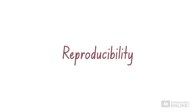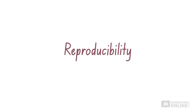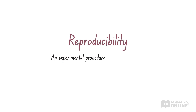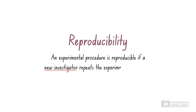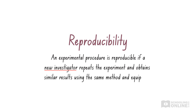Another aspect of reliability is reproducibility. An experimental procedure is reproducible if a new investigator repeats the experiment and obtains similar results using the same method and equipment. A reliable experiment is one with a high degree of reproducibility.